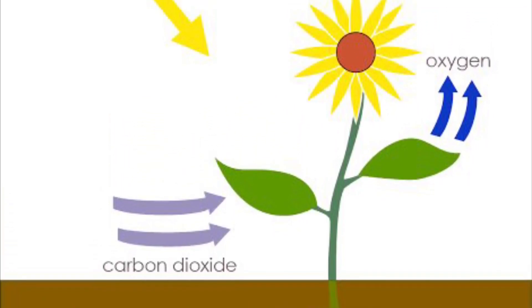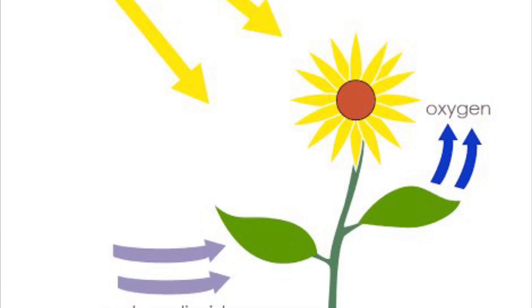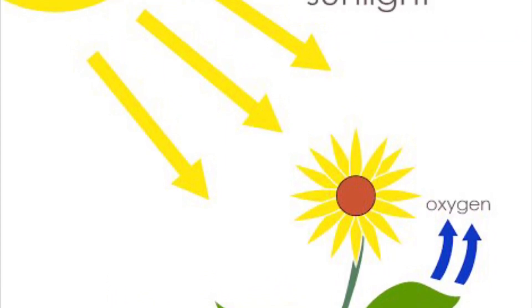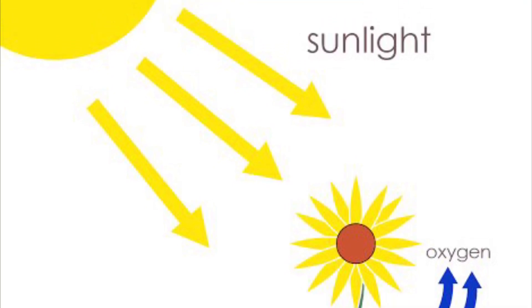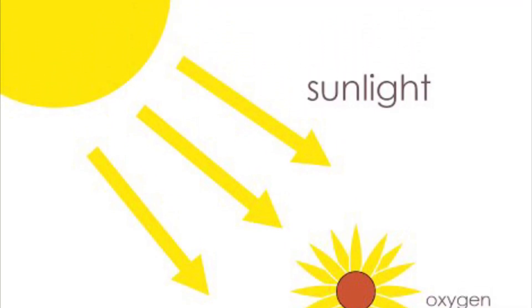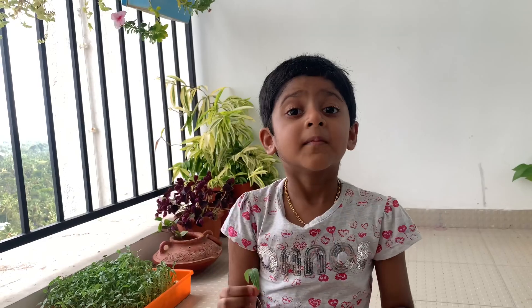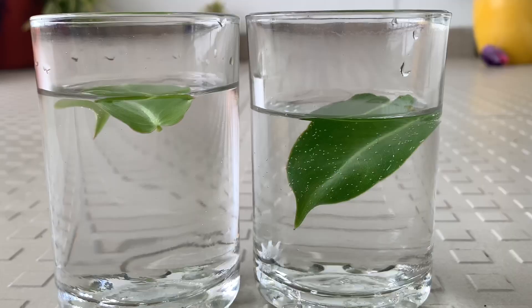This whole process of making food by plants is called photosynthesis. Plants take in carbon dioxide and give us oxygen. We humans take in oxygen and give out carbon dioxide.